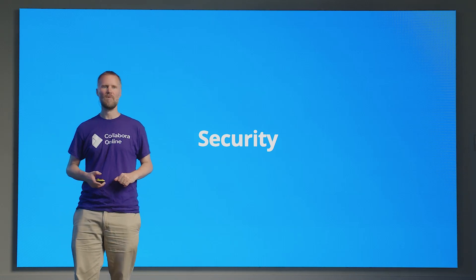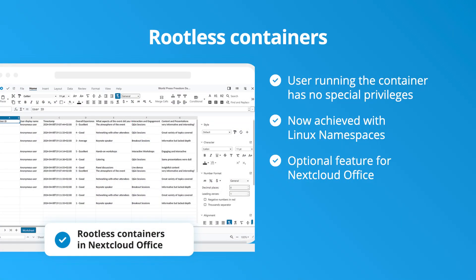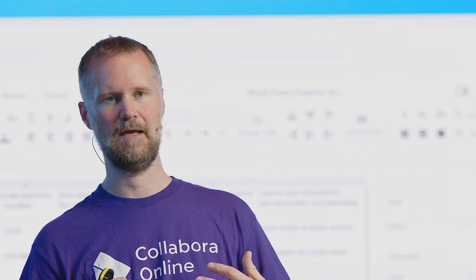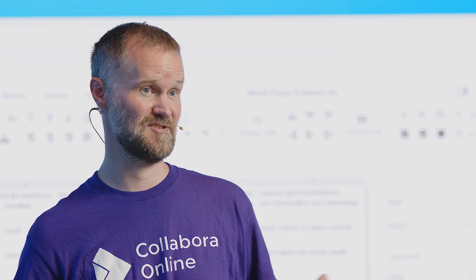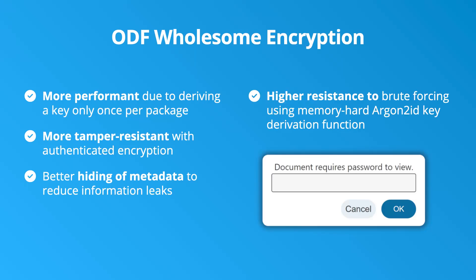Security-wise, we've done a lot of work to improve corner cases where people wouldn't give us the permissions needed to secure documents. We now use rootless containers and Linux namespaces to encapsulate documents securely on platforms like OpenShift, where ironically not having enough permissions meant we couldn't do as good a job securing documents. Additionally, there's been investment by the BSI alongside Allotropia from the LibreOffice core community to add wholesome encryption — better AES-GCM encryption and argon2 key derivation functions for the whole ODF document.